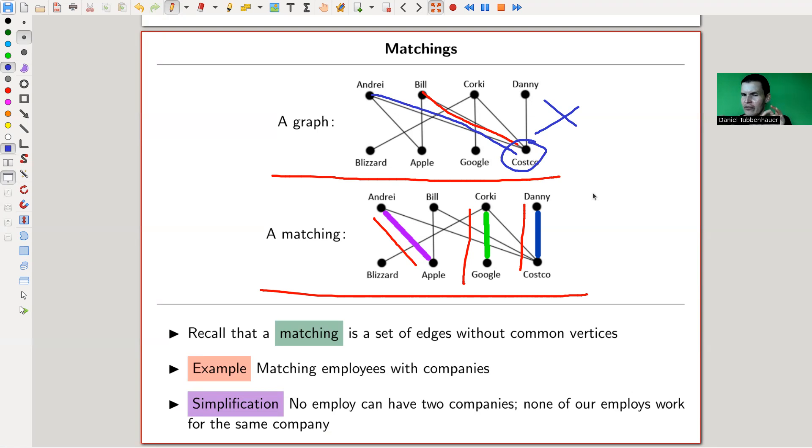And maybe matchings are somehow related to matroids. And they are. And this will turn out later to be kind of something crucial, which I'm going to mention later. But right now, it's just this example. So I hope it's reasonably clear what a matching is. Just a collection of edges with no common vertices. And that's just what a matching is. Like matching employees with companies.